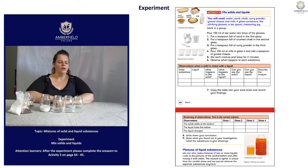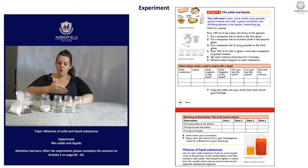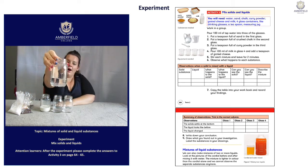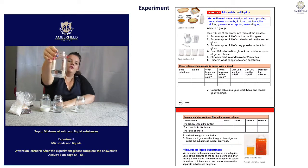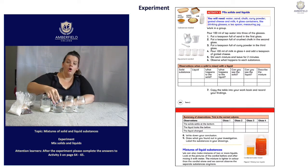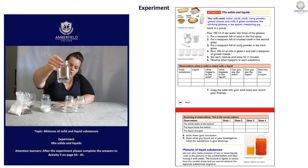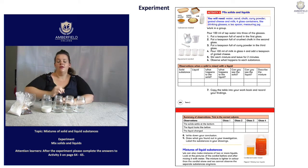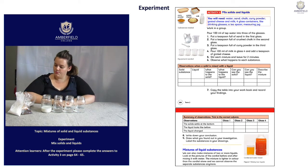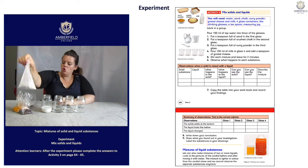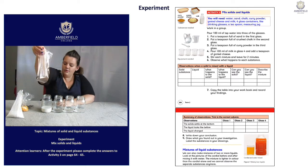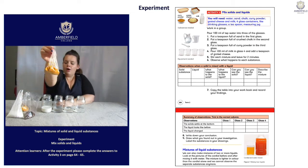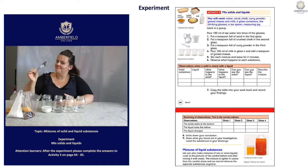Let's get started. For this experiment, we will need four jars. In jar 1, I have 100 ml of tap water. In jar 2, I have 100 ml of tap water. In jar 3, I have 100 ml of tap water. And in jar 4, I have 100 ml of milk. The rest of the ingredients you need will be a teaspoon of chalk, a teaspoon of sand, a teaspoon of curry powder, and a teaspoon of cheese. You will also obviously need a teaspoon.